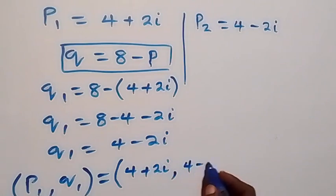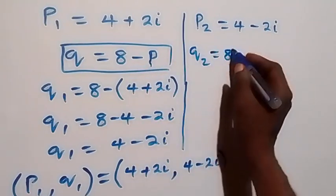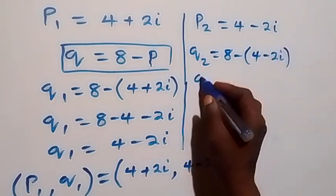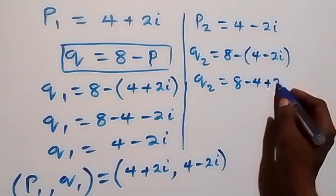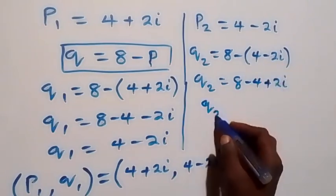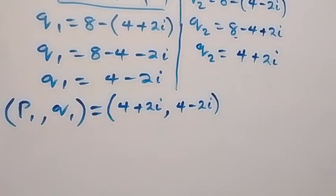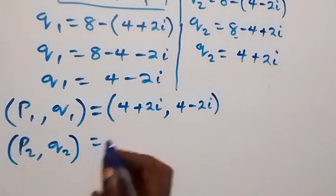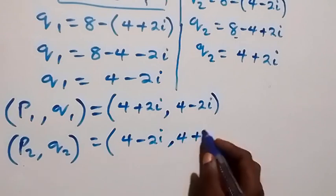For q2, we use the same relation: q2 equals 8 minus p2, which is 8 minus (4 minus 2i). The minus times minus becomes plus 2i, so q2 equals 8 minus 4 plus 2i, giving q2 equals 4 plus 2i. The second solution set is (p2, q2) = (4 − 2i, 4 + 2i).